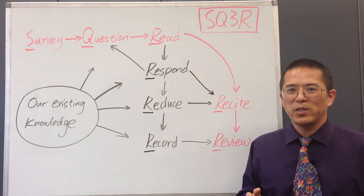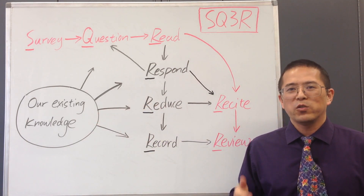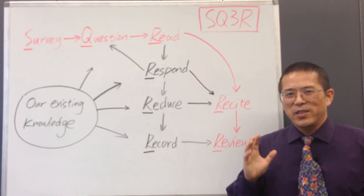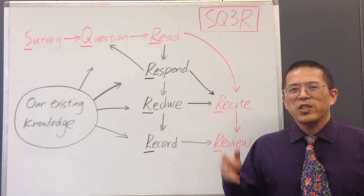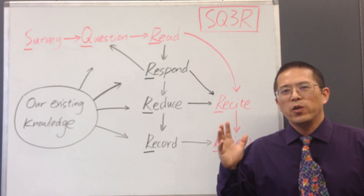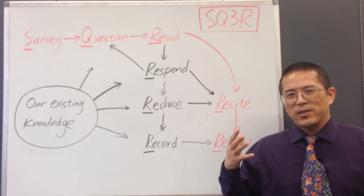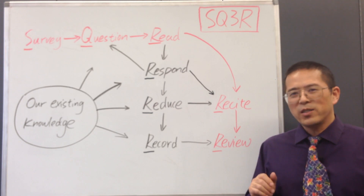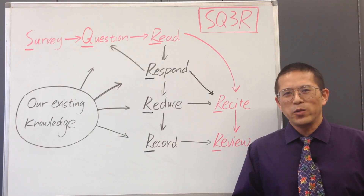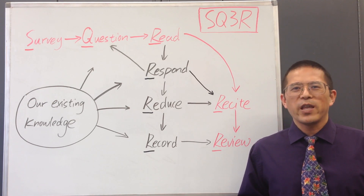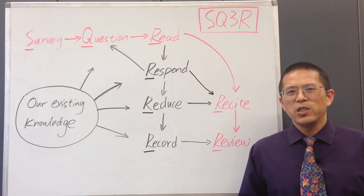All three R's can help us to associate the new information with our existing knowledge and therefore help us to better understand. Respond involves answering questions that fill gaps in our existing knowledge. Reduce involves digesting new information, connecting them to old information, and summarizing all the information. Record is taking notes using our own words — not only to help us understand now, but also to help us for review in the future. While reading, we should focus on looking for new concepts rather than new facts.